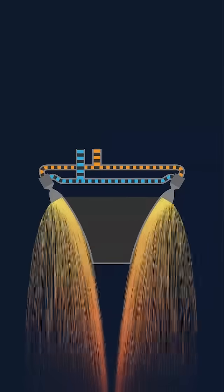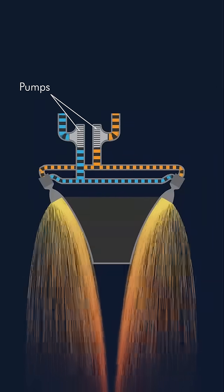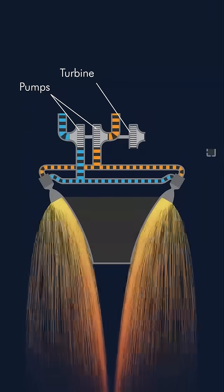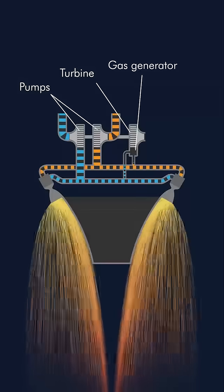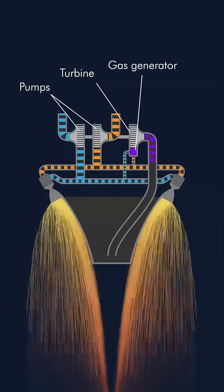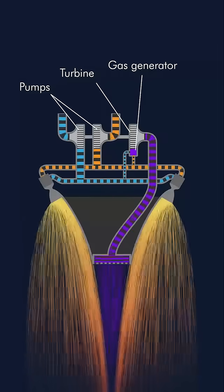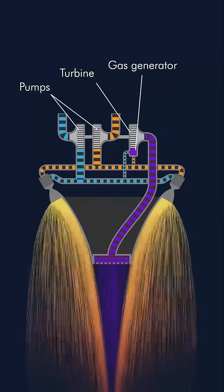To ensure proper flow of propellant, we add pumps. To power the pumps, we add a turbine which itself is powered by gas produced inside a gas generator. After powering the turbine, the gas flows through holes at the base of the spike, producing some additional thrust.